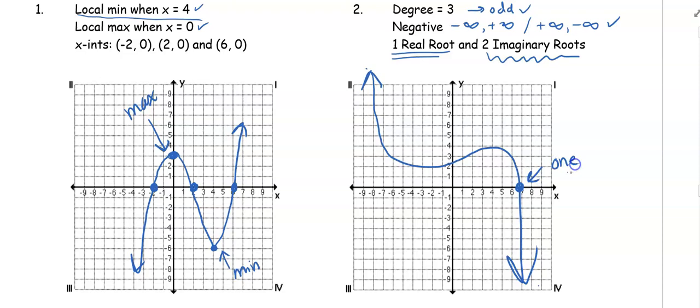I have my one real root and that means I have two imaginary roots left over. So the key was I made this little hump here.